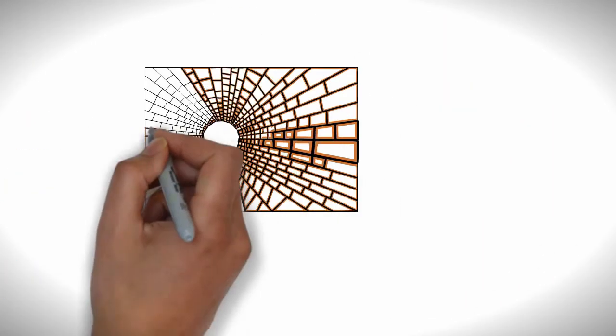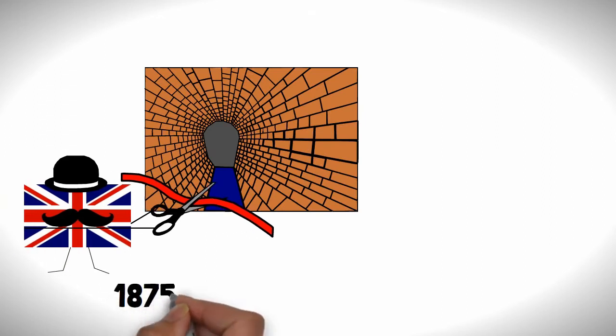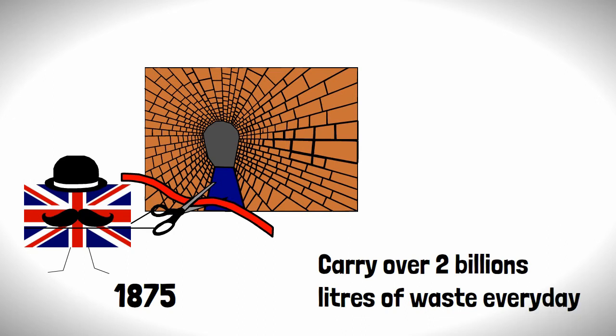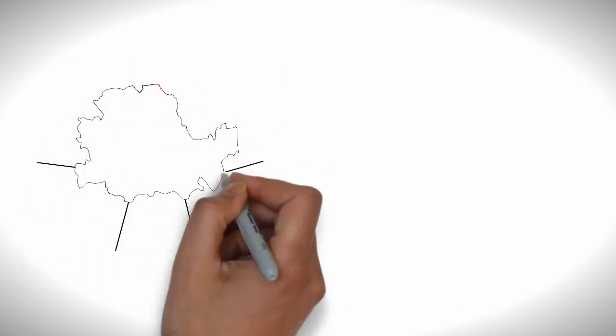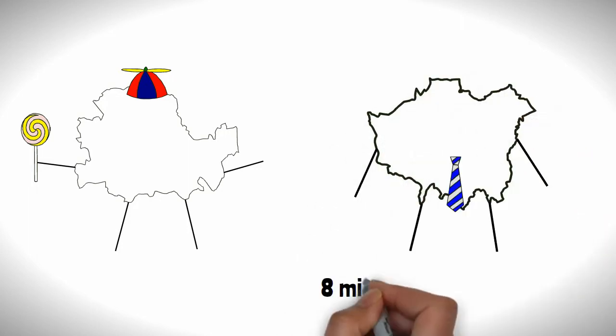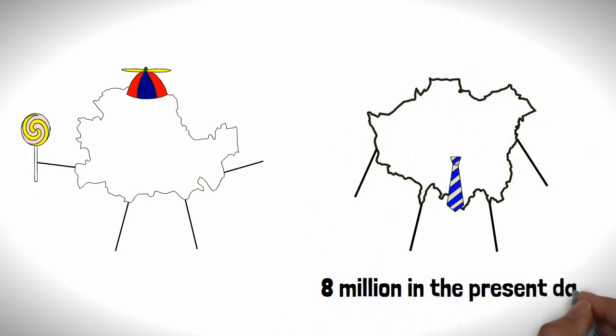Work on the sewers was finally completed in 1875, and would carry over 2 billion litres of waste every day. This essential piece of infrastructure would allow for London's population to continue to grow throughout the centuries to over 8 million in the present day.